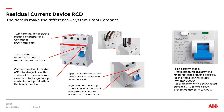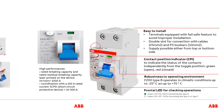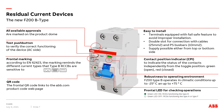The F200 and DS200 series of ABB's RCDs are part of the entire range of System Pro M Compact. The new Type B RCDs are the newest members of the System Pro M Compact. Type B is becoming more and more important as AC-DC and DC-AC inverters are used more often.